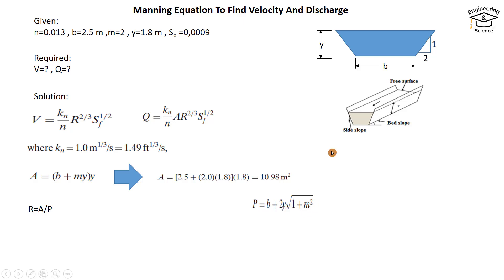That is the equation to find wetted perimeter, which equals b + 2y√(1 + m²). This term represents the two sides—this side and that side—because wetted perimeter means the sides of the channel which have contact with the water.